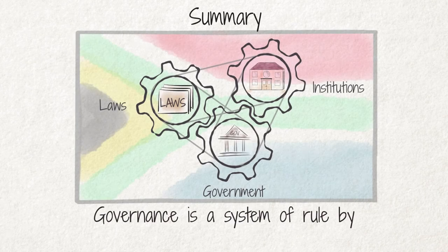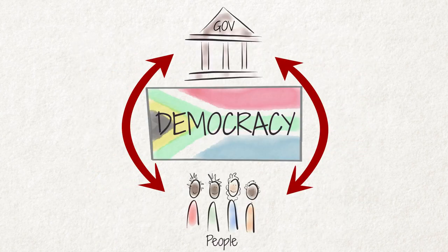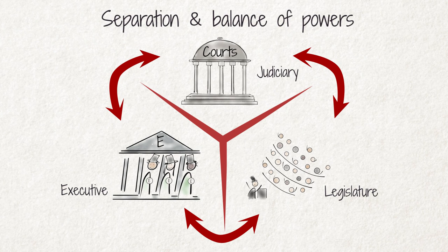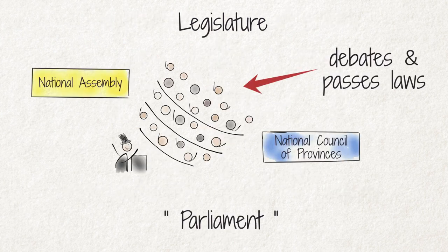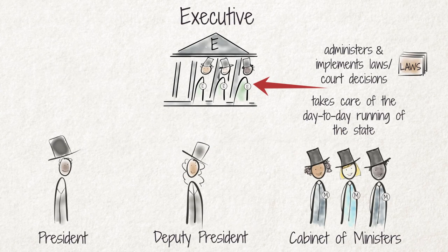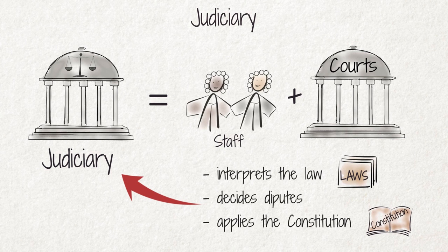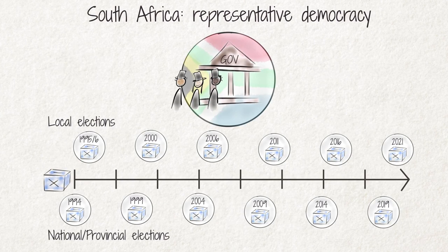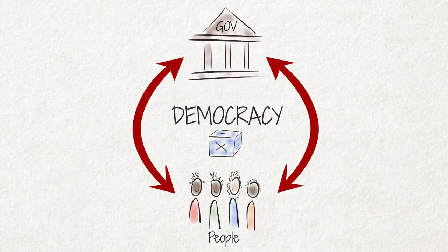Summary: Governance is a system of rule by which a state is organized and governed. South Africa has a democratic government, which is characterized by the separation and balance of powers. The legislature creates and passes state law, the executive implements state law, and the judiciary interprets and applies it. South Africa is furthermore a representative democracy, which is formed by means of periodically held elections on local, provincial, and national level. Elections allow ordinary citizens to determine who should manage and govern the country, and therefore represent their interests.